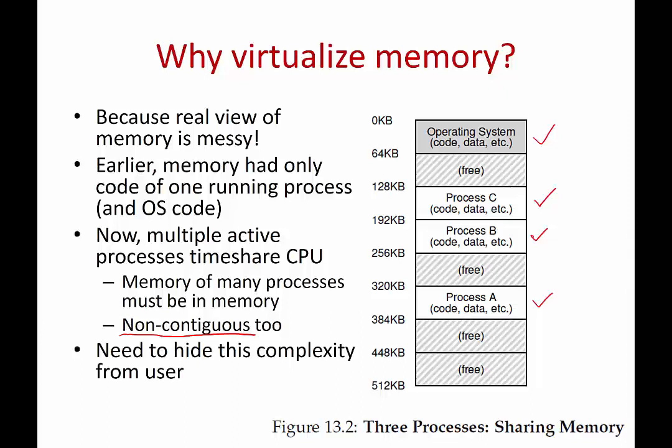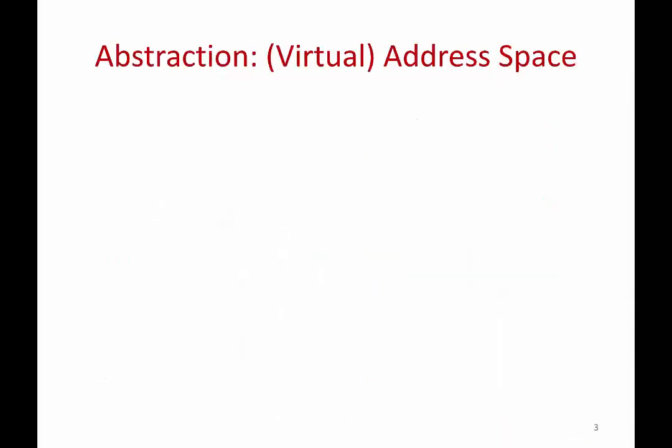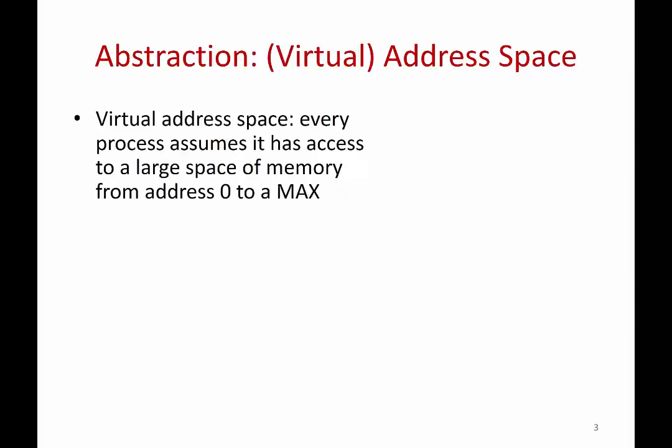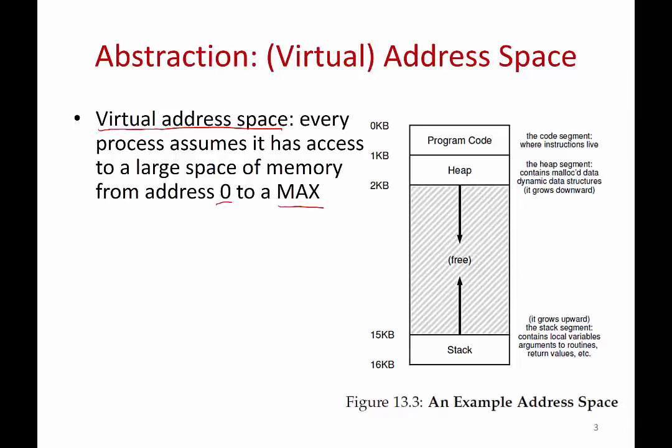Because of that complexity, the operating system virtualizes the memory and provides a clean abstraction to user programs. This abstraction is called an address space or a virtual address space. Every process assumes it has access to a large contiguous space of memory starting from address 0 — byte number 0 — to some maximum value. Every process thinks the actual RAM looks something like this. This is called the address space or virtual address space of a process.